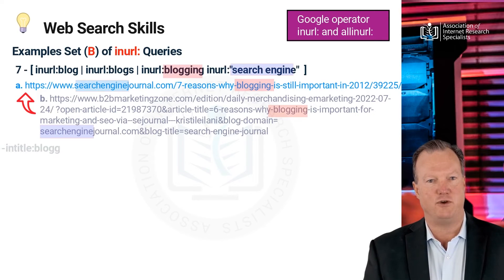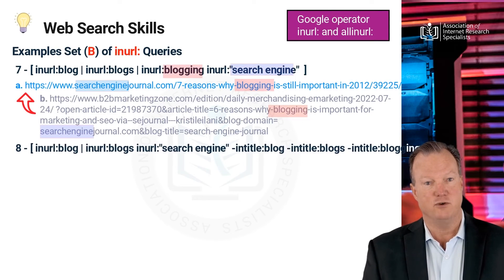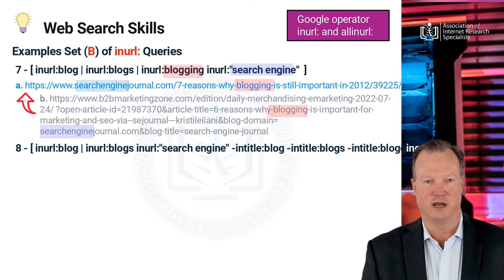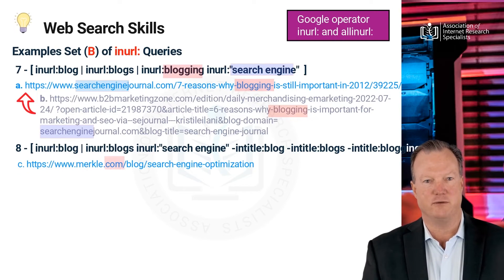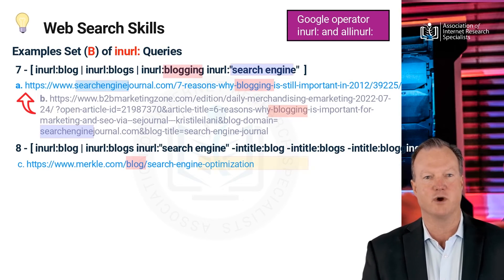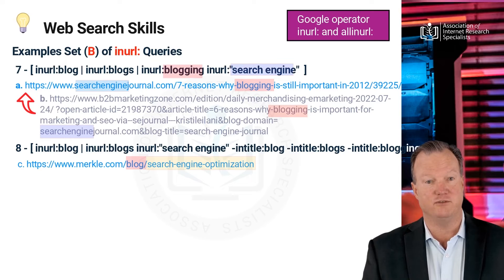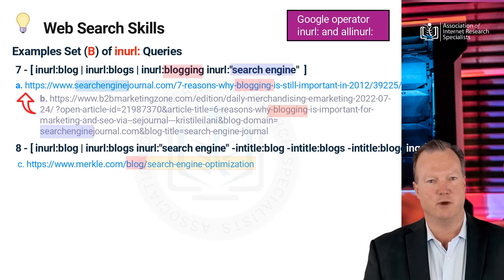In query 8, we gave a choice of words blog or blogs, and forced the inclusion of the term search engine. Furthermore, with the help of a minus sign, we excluded the word blog and its derivatives from the document's title. You may observe the returned URL C as the outcome of the result. Notice here that the document is pulled from a directory source named blog, whereas the document titled search engine optimization excludes the words blog, blogs, and blogging. A user may apply this approach if the intention is to ensure the document source is a written blog, and where it must not confuse a match for blog, blogs, or blogging to be part of the document title.